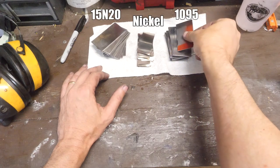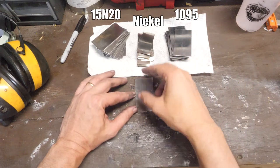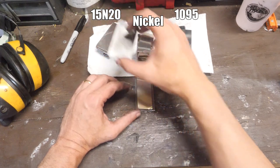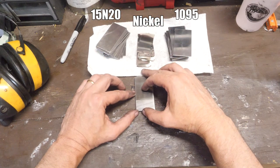Enough knife making, let's go fishing with some custom forged Damascus lures. We're going to make some 15N20 and 1095 steel lures with some nickel thrown in for that extra eye-catching shimmer.